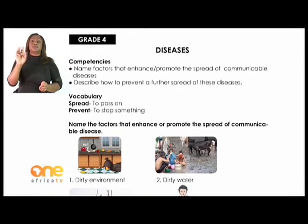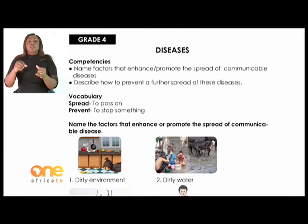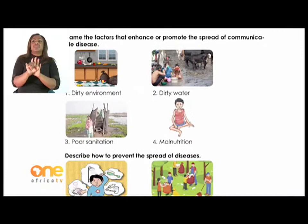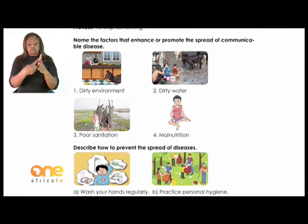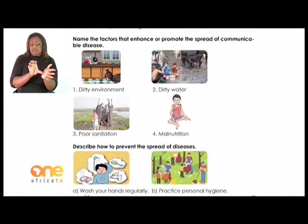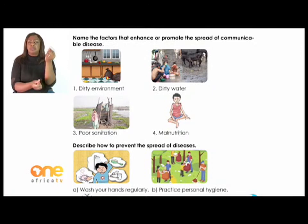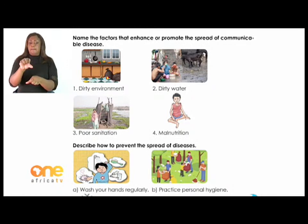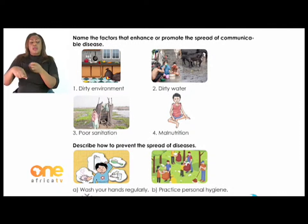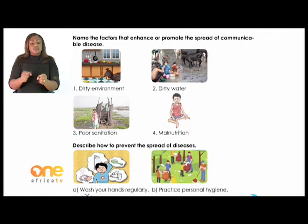Now let's name the factors that enhance or promote the spread of communicable diseases. There is a dirty environment. If you look at that picture, you will see that there is a dirty kitchen. Contaminated kitchen — people often don't wash their hands between handling possibly contaminated food, such as meat and vegetables. This cross-contamination is a main cause of foodborne disease.